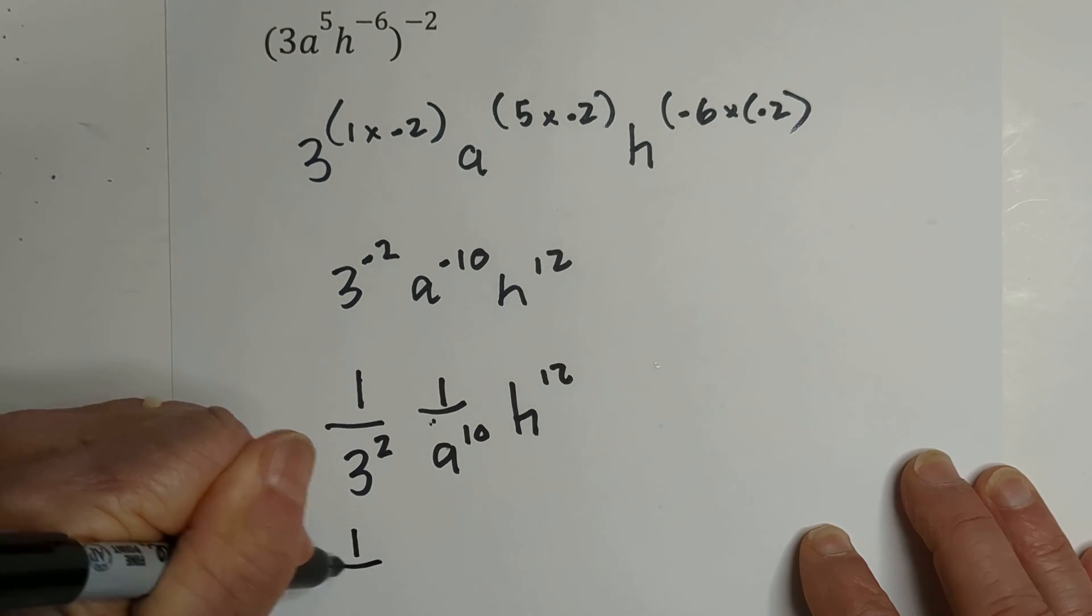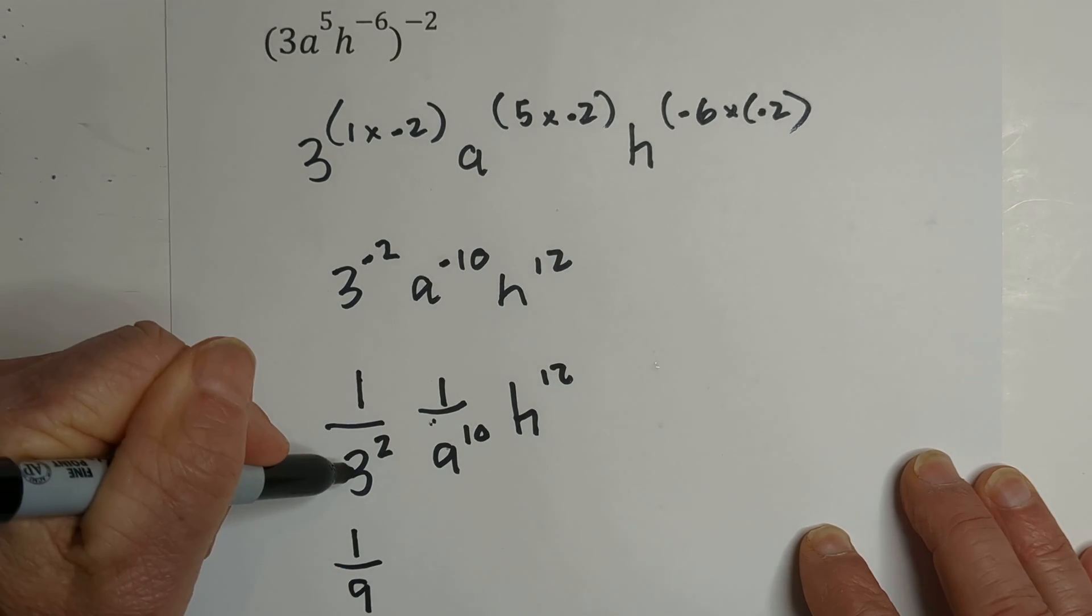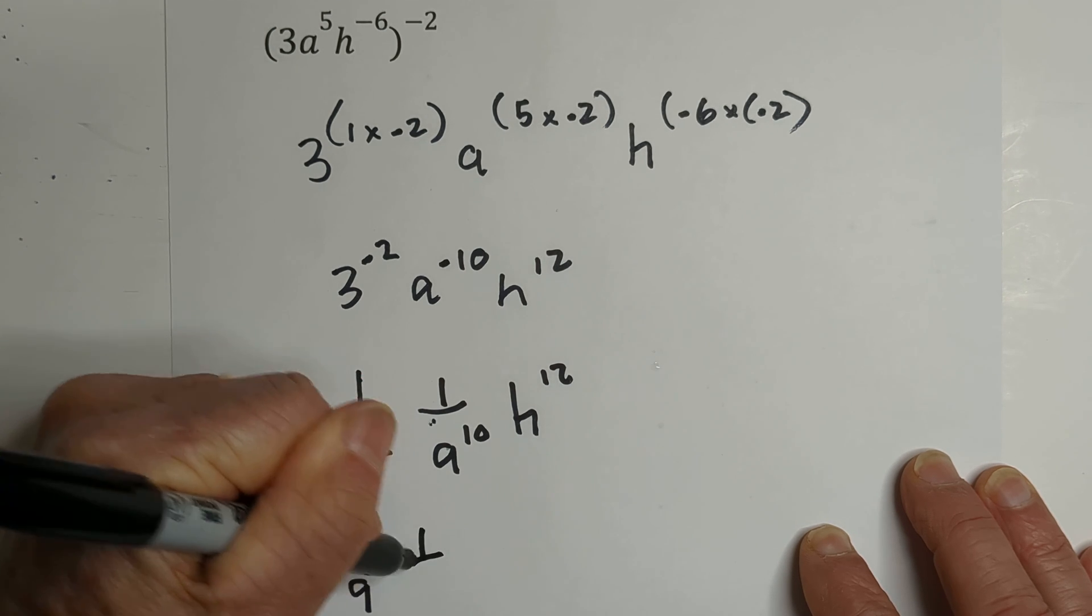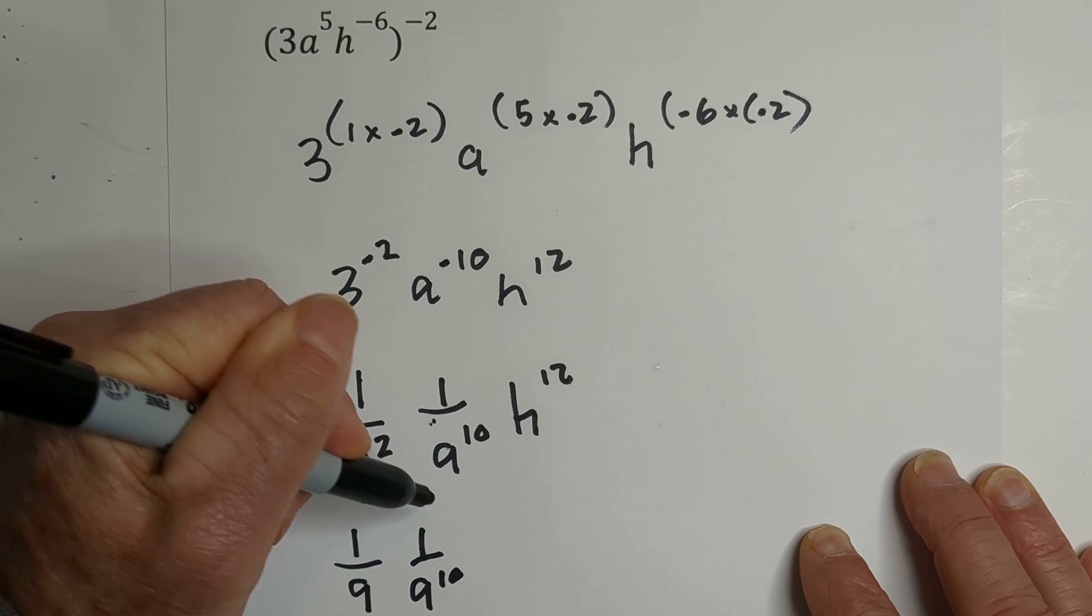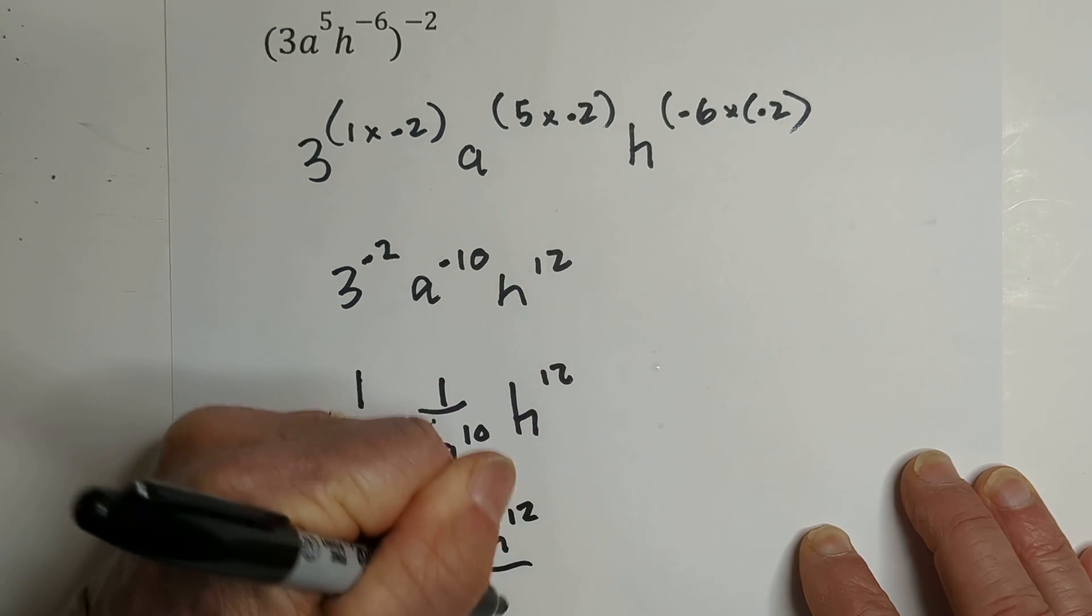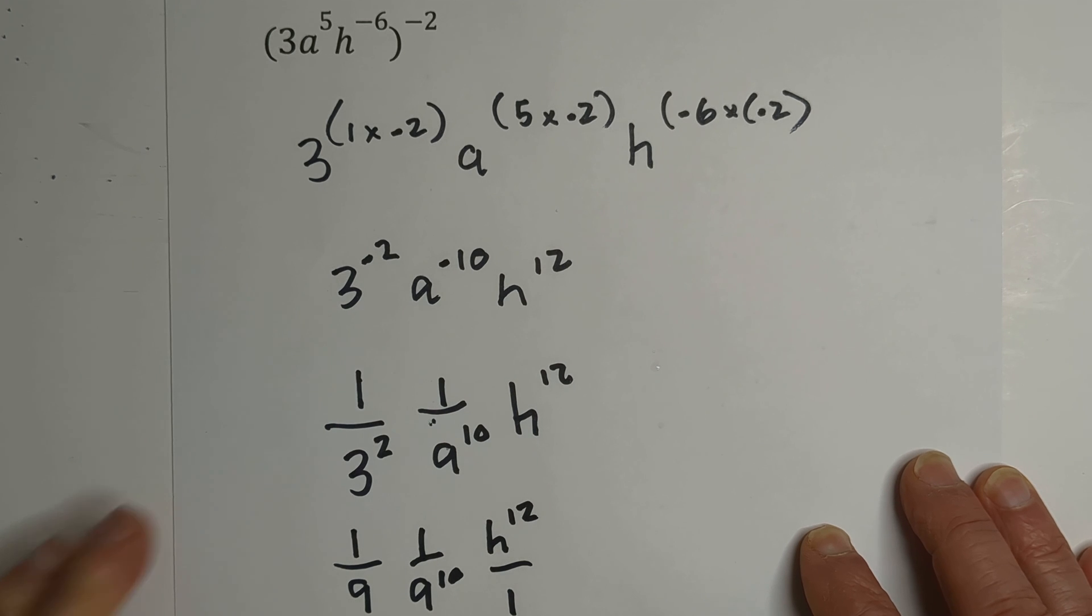that will become 1/9th, because 3 squared is 9, and then we have 1 over A to the 10th, and the H will be on top.